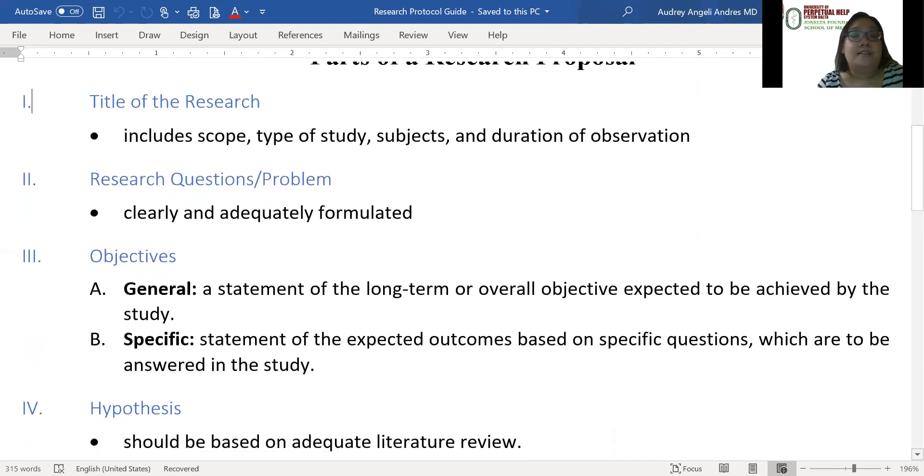The third part would be the objectives. General objectives are a statement of the long-term or overall objective expected to be achieved by the study. Specific objectives are statements of the expected outcomes based on specific questions to be answered in the study. Refer back to our lecture on objectives on how to properly make an objective.